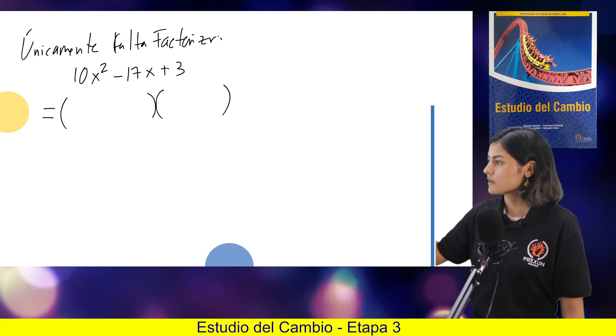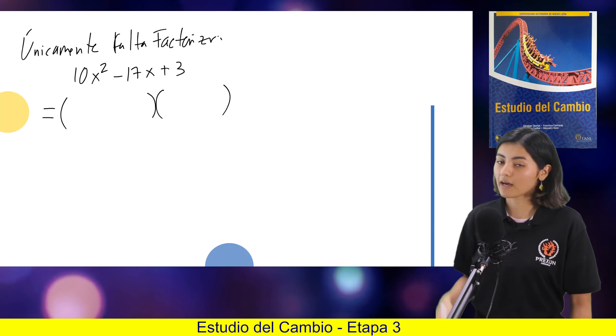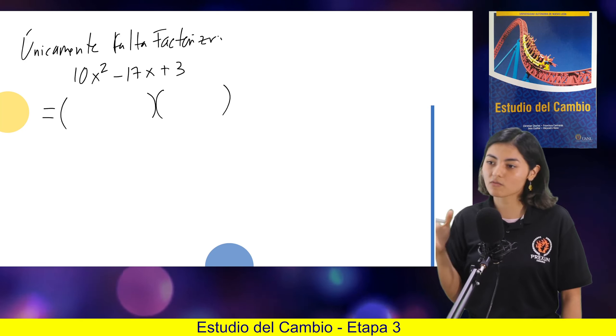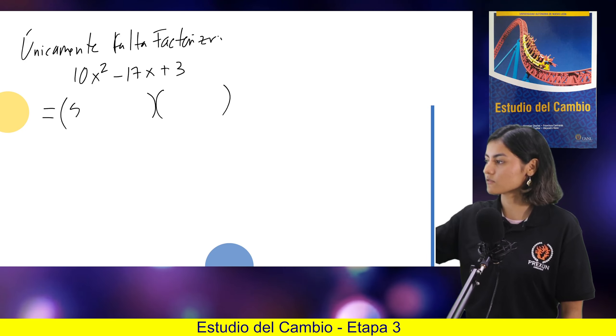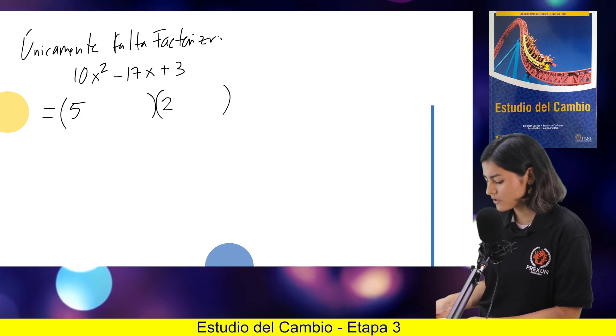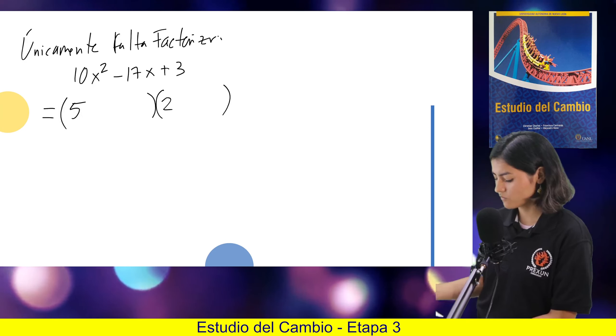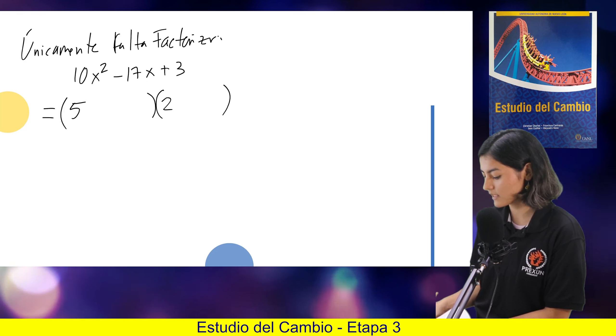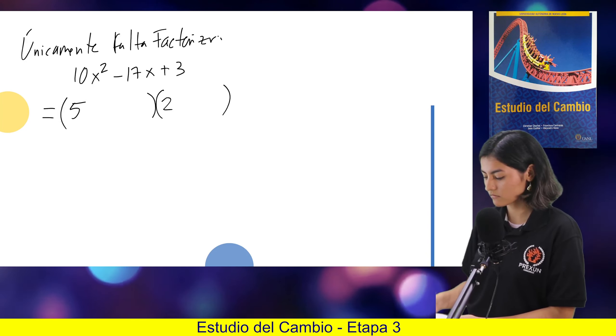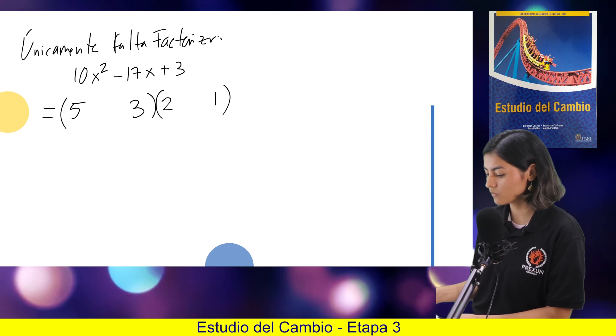A veces simplemente, en este caso por ejemplo, abrimos dos paréntesis. Buscamos dos números que multiplicados den 10. De preferencia que en un lado quede un 2. Aquí sería un 5 por 2. Y dos números que multiplicados nos den un 3, y pues sería el 3 y el 1. Aquí diría un 3, aquí un 1.